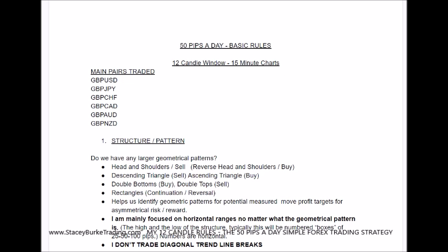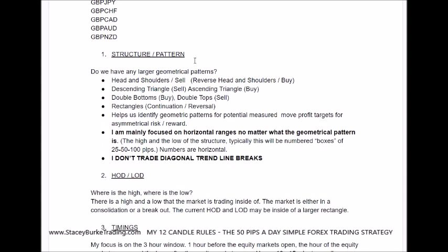I use the 15-minute charts. The main pairs that I trade are the Pound USD, Pound Yen, Pound Swiss, Pound Canadian, Pound Aussie, and Pound New Zealand. The first thing I look at is the general structure and pattern of the trend — the geometric pattern. Are we in any sort of bigger geometric shape: head and shoulders, three push patterns, reverse head and shoulders, descending triangle, double bottom, ascending triangle, double top, rectangles? That helps me identify geometric patterns for potential measured moves, profit targets, asymmetrical risk-reward, and the type of setup — sell, buy, or trend trade.